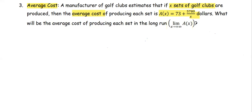What will be the average cost of producing each set in the long run? In the long run means eventually what's going to happen. When we write it in mathematical notation, it will be in the form of the limit of a(x) as x approaches positive infinity.